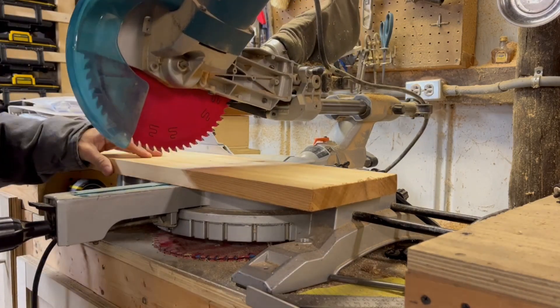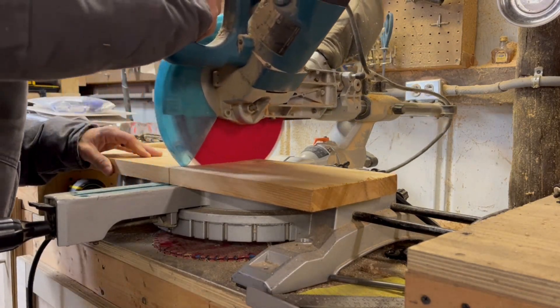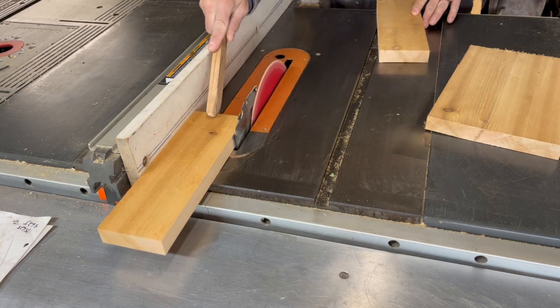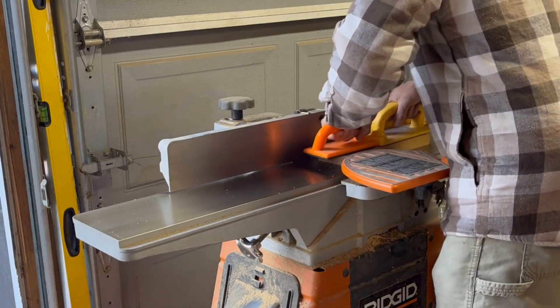First step is to trace out the approximate design and then cut your board width and lengthwise. For the most seamless joint between the two boards I use a jointer.